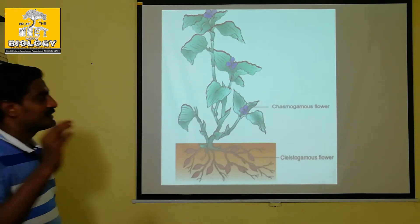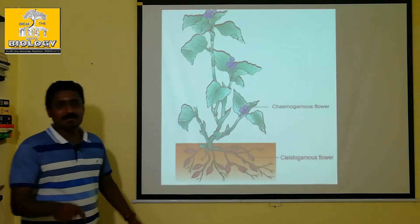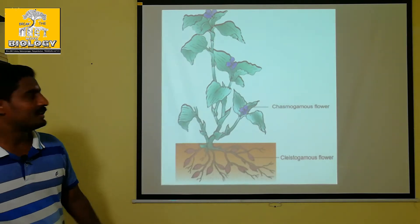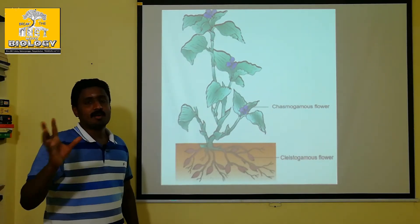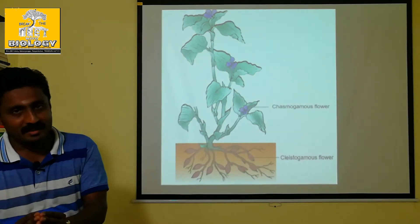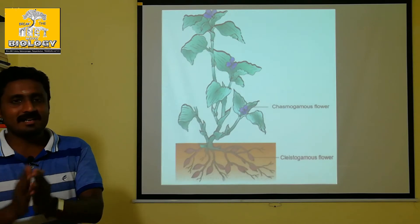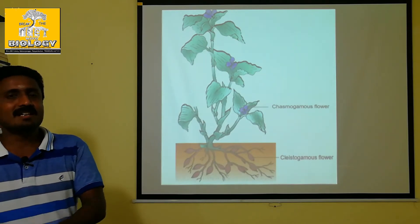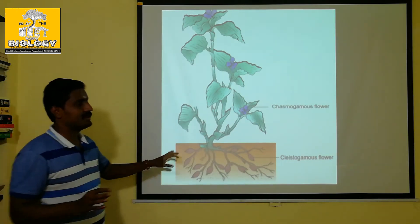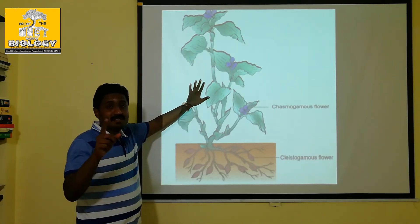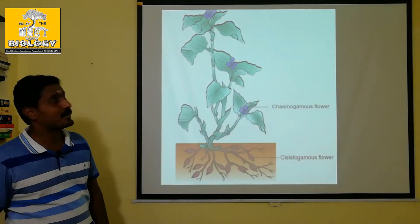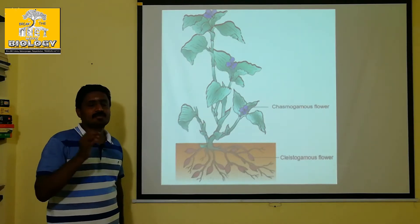The open aerial flowers are called Chasmogamous flowers. Chasmogamous flowers are open flowers, while Cleistogamous flowers remain closed. In Chasmogamous flowers, pollination occurs openly. In Cleistogamous flowers (closed flowers), self-pollination is enhanced even under unfavorable conditions, allowing the plant to continue to develop and produce fruit.